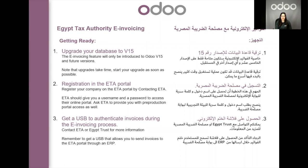The second step is to register in the ETA portal. At this point, you should have a username and a password that lets you log in to your ETA portal. The third step is to get a USP to authenticate invoices during the e-invoicing process. It's very important to make sure that the USP you get lets you authenticate invoices while sending them to the ETA portal through an ERP.